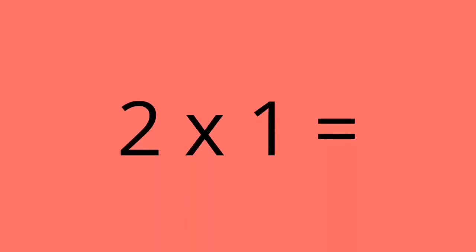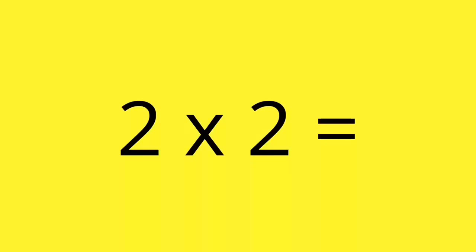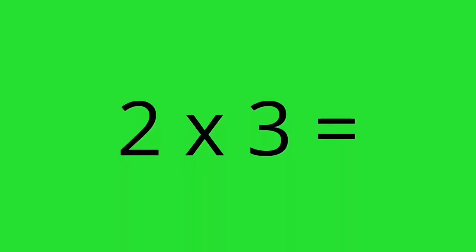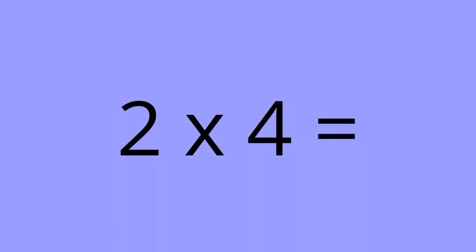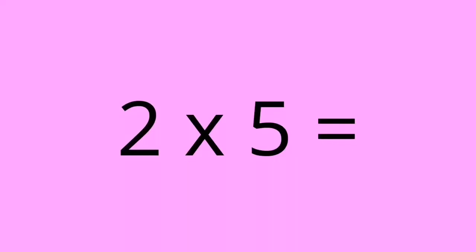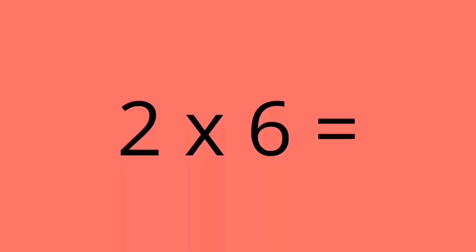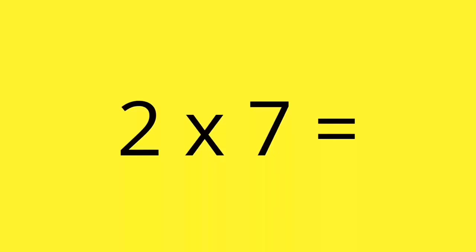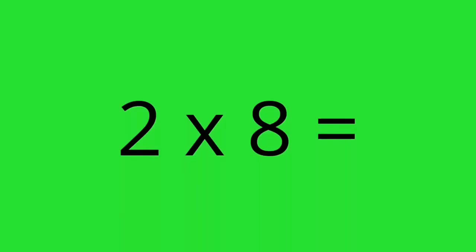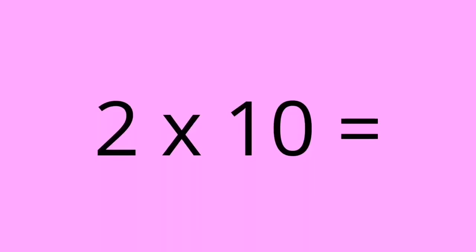2 times 1 equals 2. 2 times 2 equals 4. 2 times 3 equals 6. 2 times 4 equals 8. 2 times 5 equals 10. 2 times 6 equals 12. 2 times 7 equals 14. 2 times 8 equals 16. 2 times 9 equals 18. 2 times 10 equals 20.